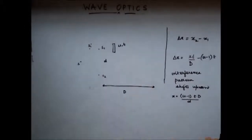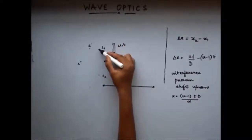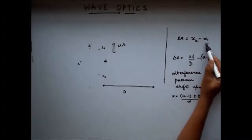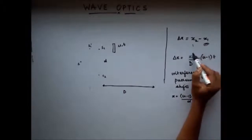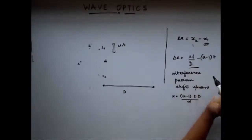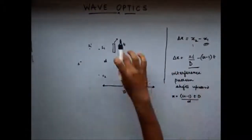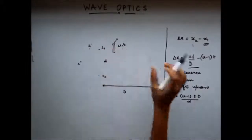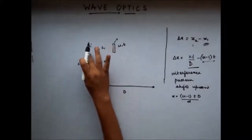In Young's double slit experiment, if we insert a glass slab in front of the first slit, what happens is that the path difference X1 increases. So the net path difference X2 minus X1 decreases by this amount. Because of the introduction of the glass slab, there is a delay of the light wave, and this delay results in an increase in path distance X1, which is equivalent to shifting S1 to S1 dash.